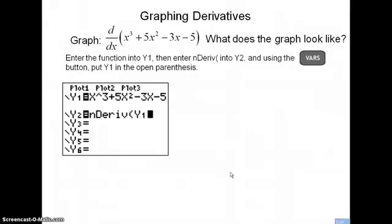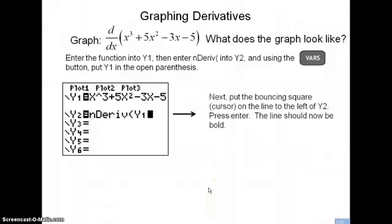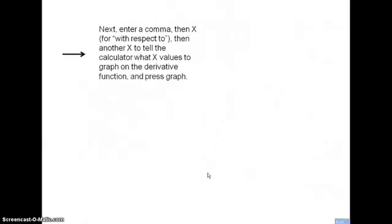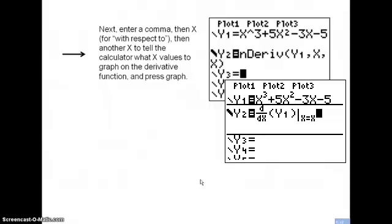Then hit the VARS button like before and enter Y1 inside that open parenthesis. Next, put the cursor on the line to the left of Y2 and press Enter so that line becomes bold. Then enter a comma, then X — telling it the with-respect-to variable — then another comma, then another X to tell your calculator what values to graph the derivative function at. Then press Graph.